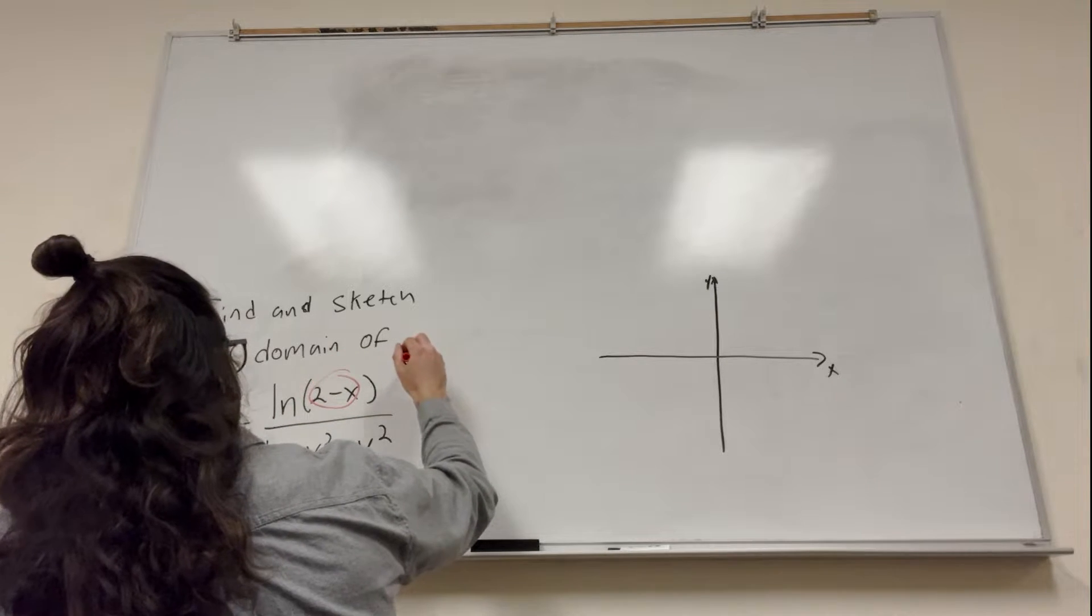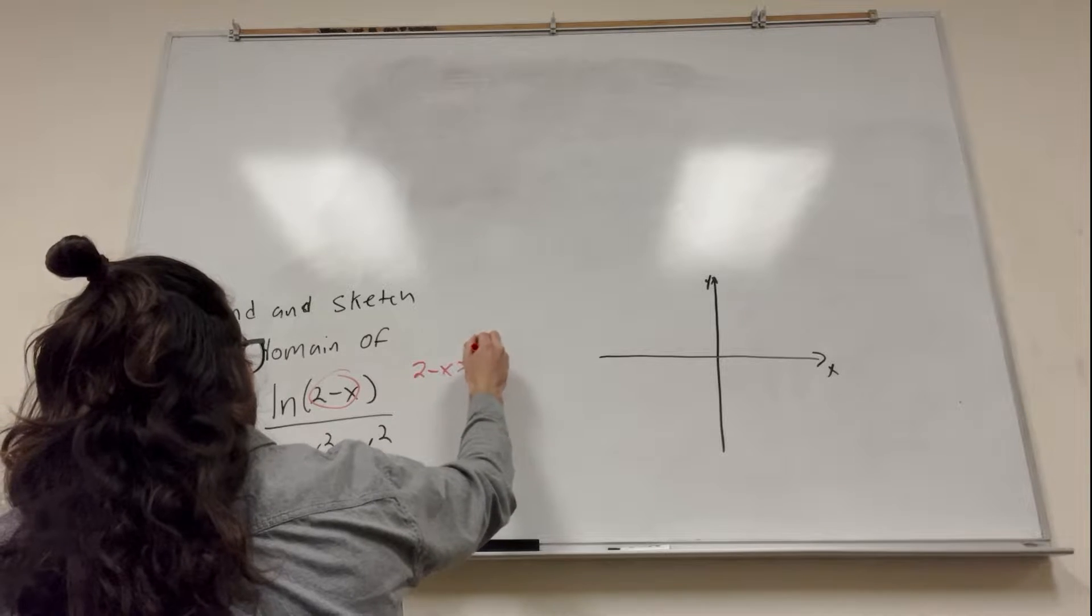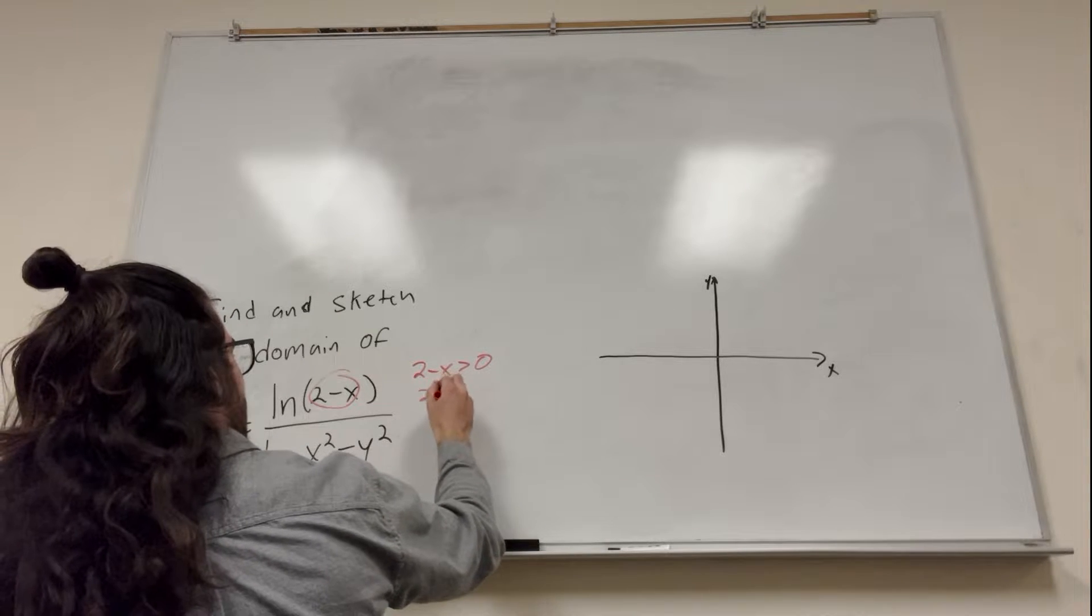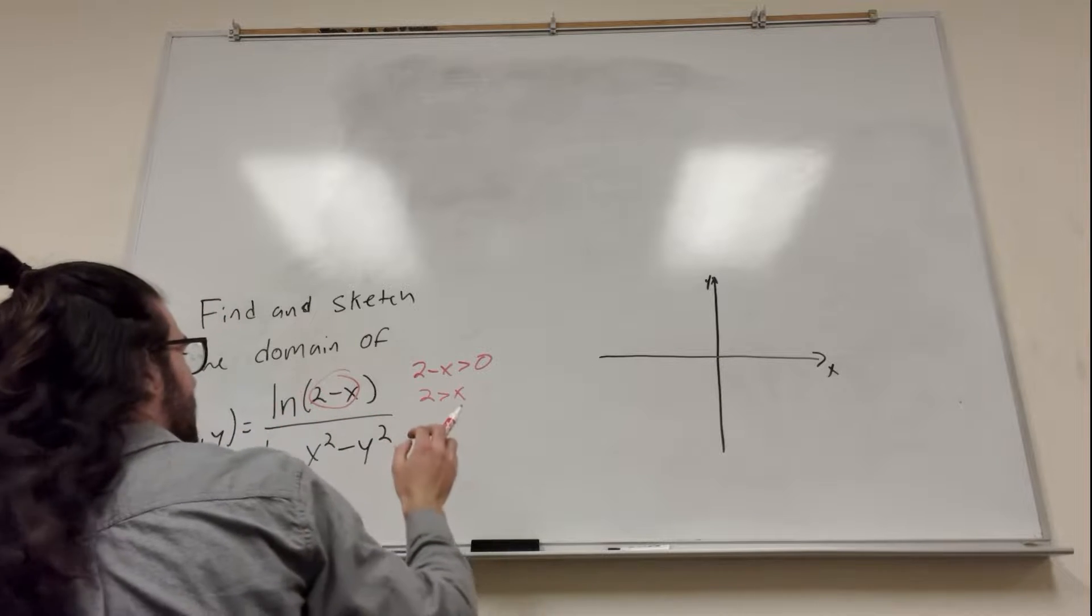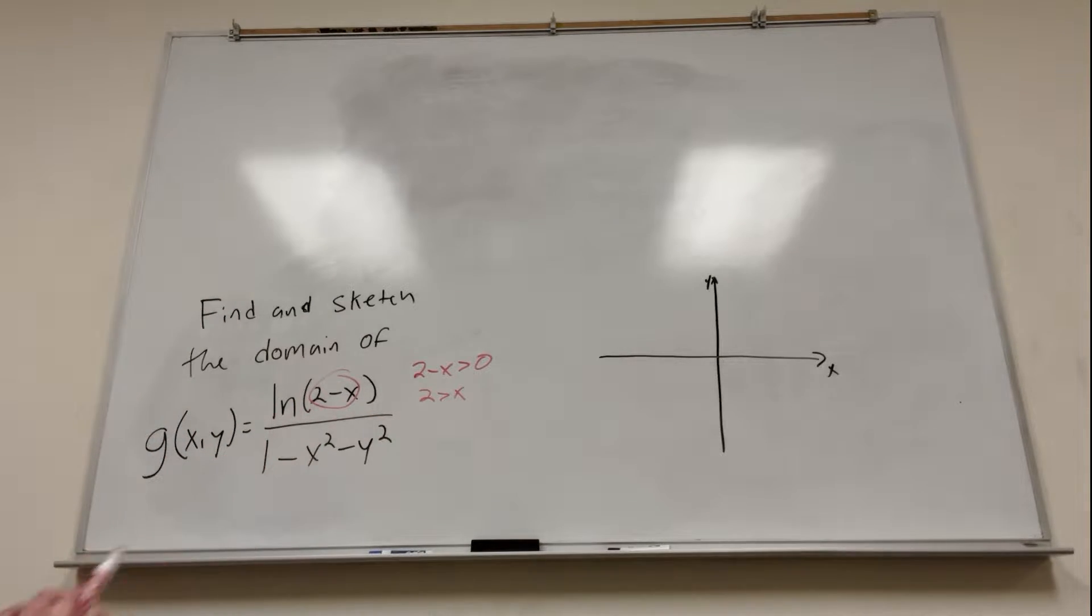So let's write that. This has to be greater than 0. So if you move the x to the other side, if you add x to the other side, x has to be less than 2.